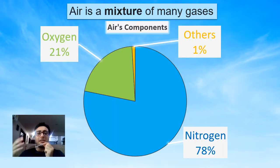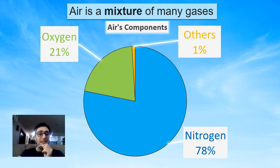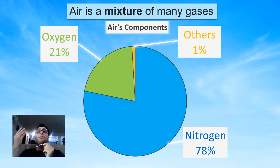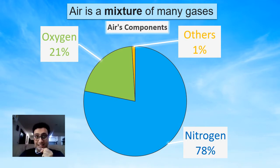Air is made of a mixture of many gases. If you don't know what gases are, gases are for example oxygen. We breathe in air, we breathe in oxygen. Oxygen is a gas.